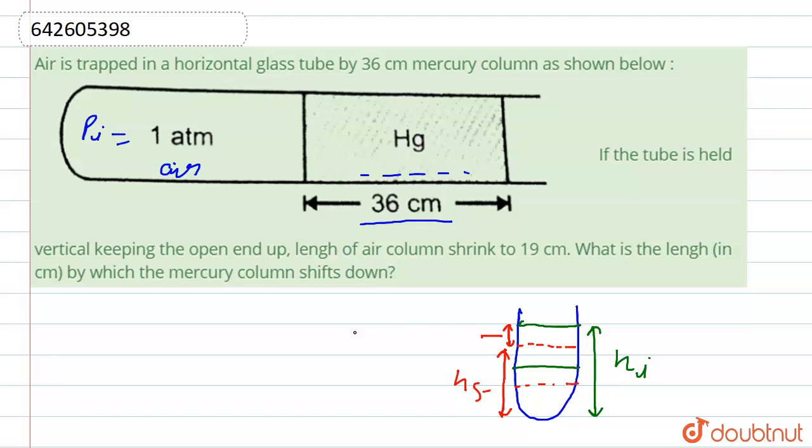So in question it is given that h_f is equal to 19 centimeter. It is given here, length of air column shrink to 19 centimeter, it is given.